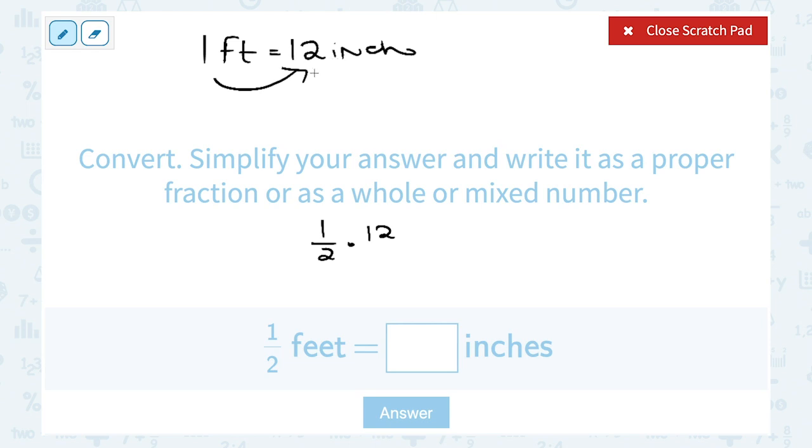If I was going from inches to feet, I would have to divide. So in this case, we're multiplying by twelve. Now when you're multiplying with fractions, I can write this as twelve over one, or I can think of it as half of twelve. Well, half of twelve would be six. So half a foot is equal to six inches.